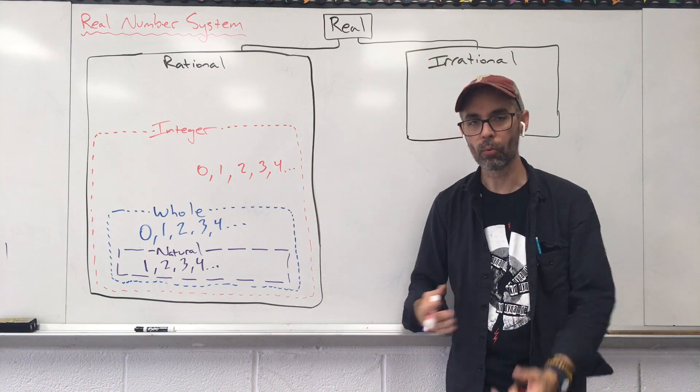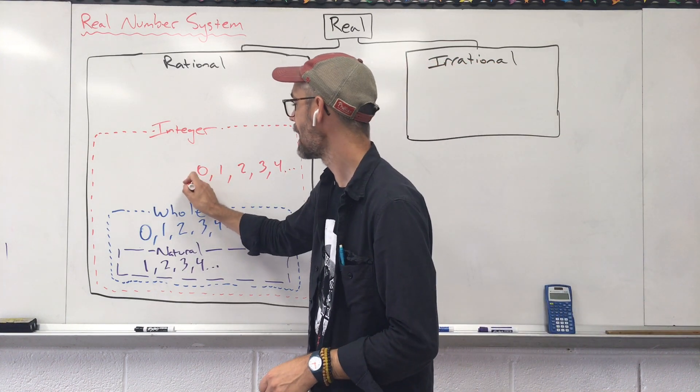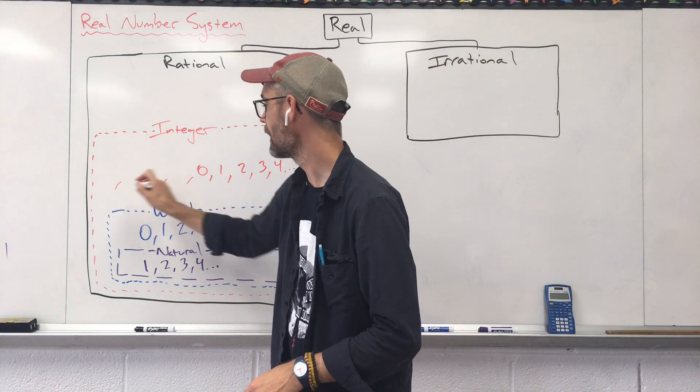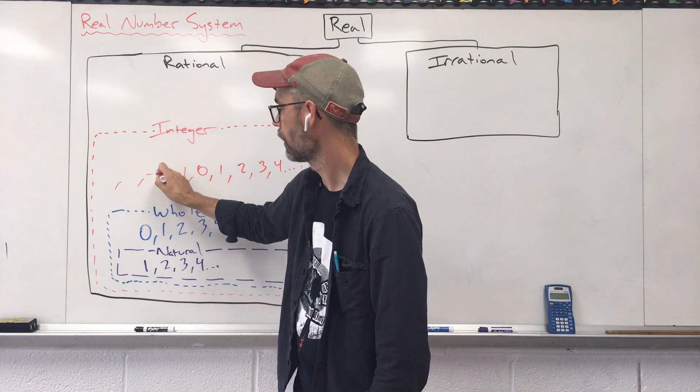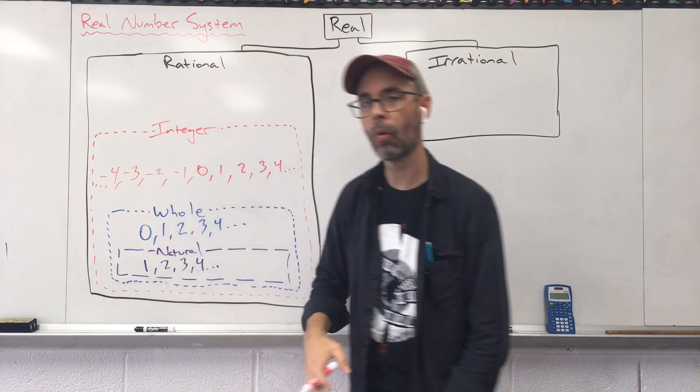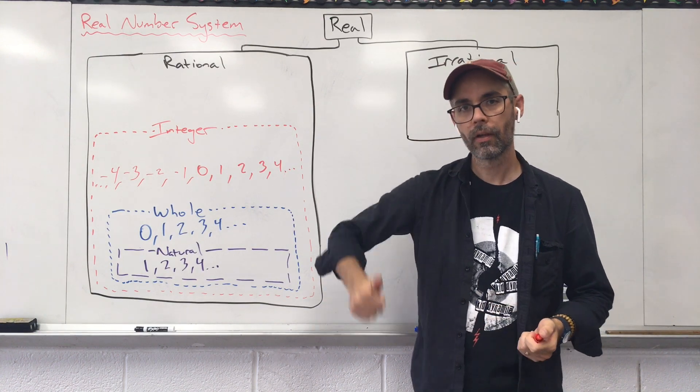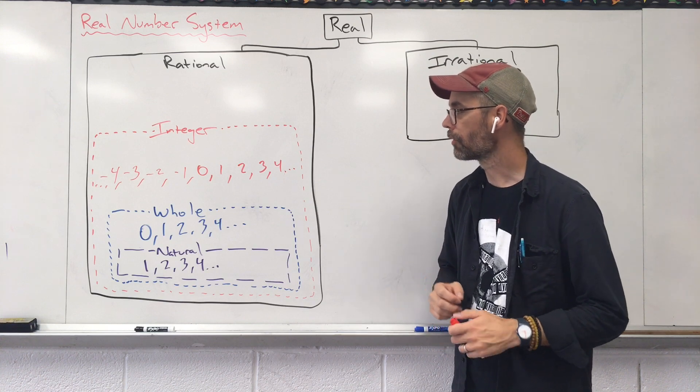But we need to add to this group. We need more numbers. So what are those numbers that we add? Now it's going to be negative numbers. Negative one, negative two, negative three, negative four, and so on. It keeps going and going and going. Integers, positive, negative, and that number zero.